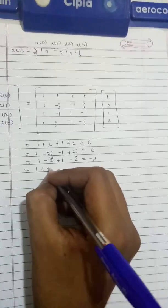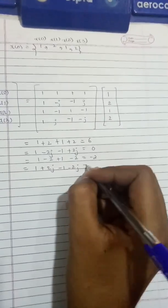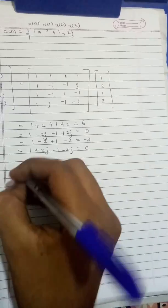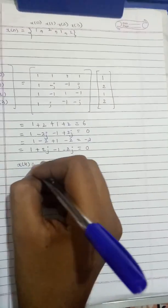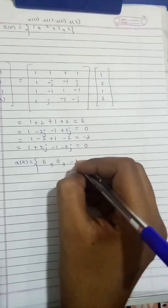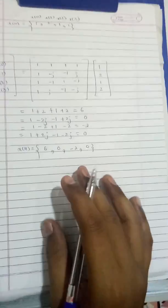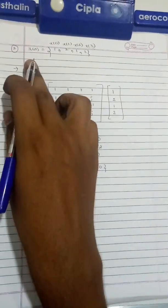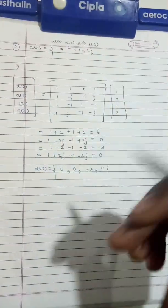Fourth element: 1 + 2j - 1 - 2j = 0. So the resultant X of K is [6, 0, -2, 0]. This is the DFT of X of n.